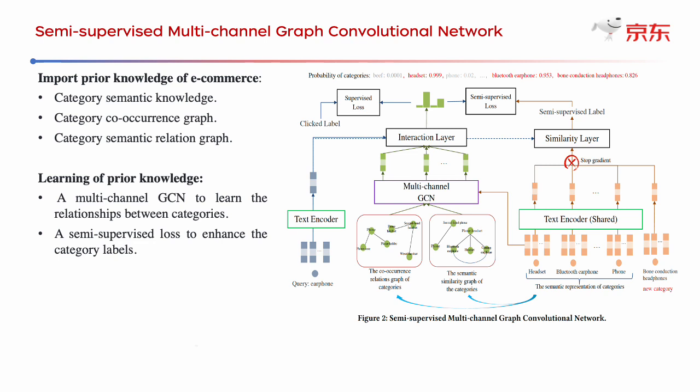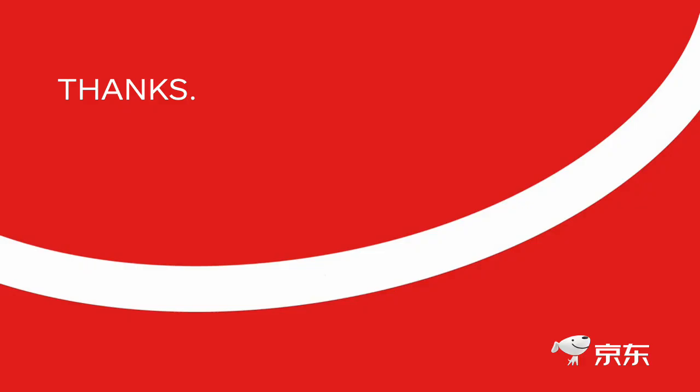We design a new model called SMGCN. The model uses a multi-channel GCN as a graph structure encoder to learn the relations between categories. We also design a semi-supervised loss to use the semantic matching scores between queries and categories as a supervisor signal to enhance the category labels. Detailed model and experiments can be seen in our paper. Thank you for listening.